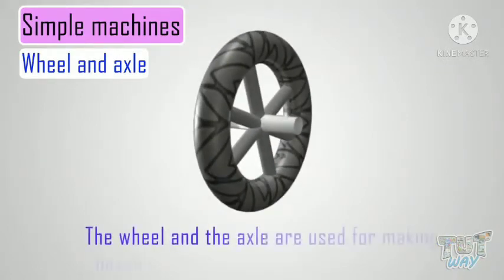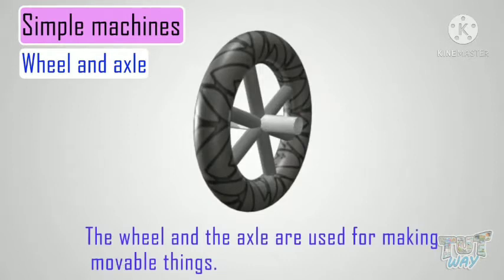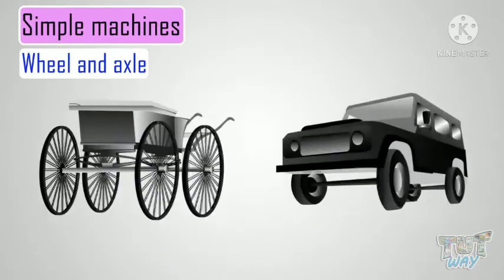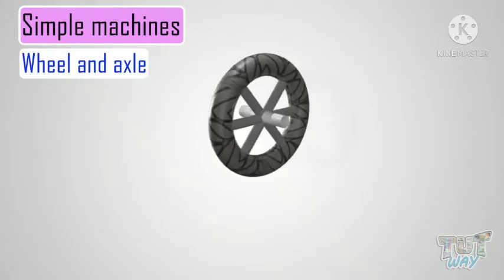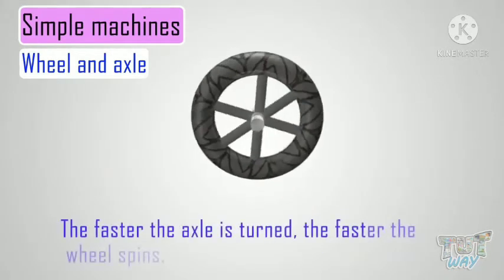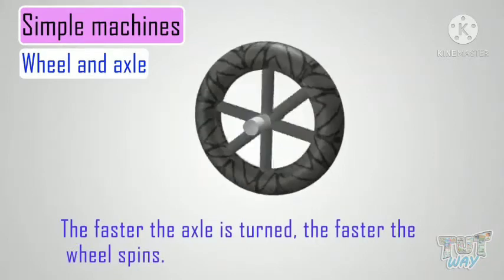The wheel and axle are used for making moving things. All vehicles are made using the wheel and axle. The faster the axle is turned, the faster the wheel spins.